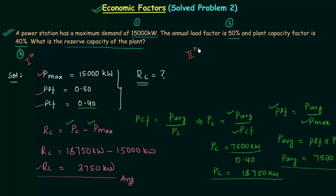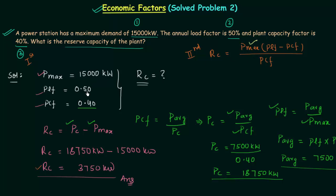Now we will talk about the second method. When you appear in your college exams, follow the first method, and when you appear in any competitive exam, follow the second method. In the second method you directly use the formula: reserve capacity is equal to Pmax multiplied by the bracket (plant load factor minus plant capacity factor) over the plant capacity factor. We have all the information: Pmax is 15,000 kW, PLF is 0.50, and PCF is 0.40. When you solve it you will get reserve capacity equal to 3,750 kW, which is the same answer as the first method.